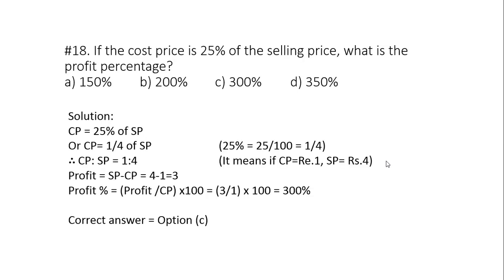Question number 18. If the cost price is 25 percent of the selling price, what is the profit percent? 25 percent is simply 25 divided by 100. That is 1 upon 4. So this way we get ratio of CP and SP as 1 is to 4. It means if CP is 1, SP is 4. So what is the profit percent? SP minus CP, 4 minus 1 is equal to 3. And this 3 when divided by CP gives us profit percent. So profit percent will be profit divided by CP into 100. Profit is 3. CP is 1 into 100 is 300 percent. So correct answer is option C.